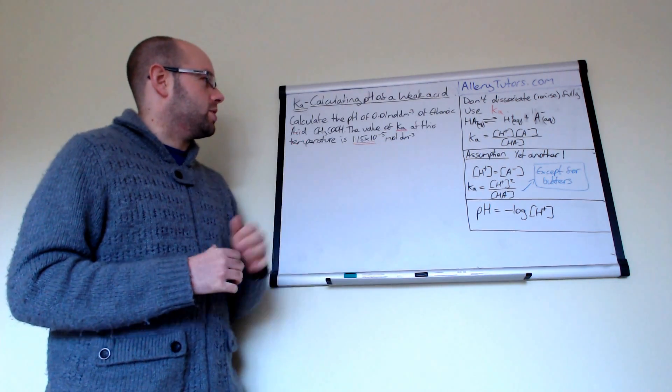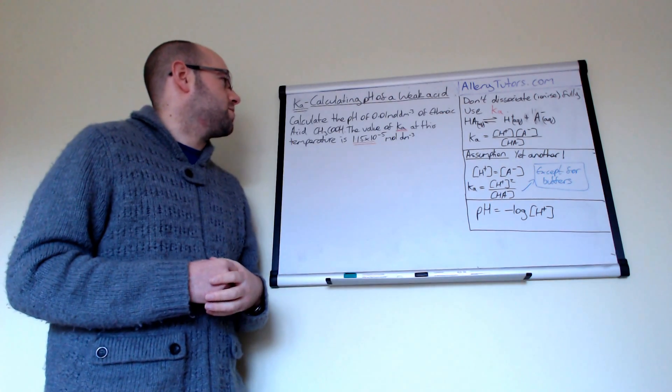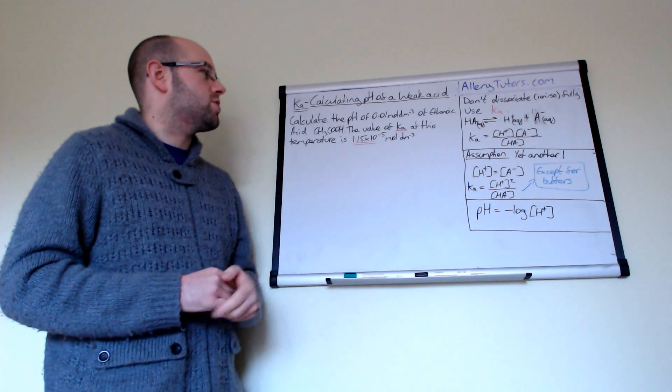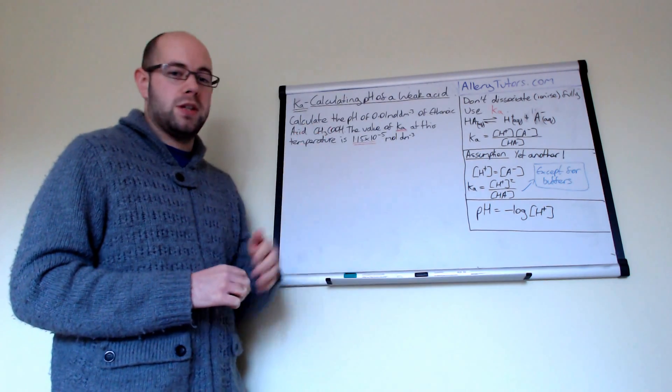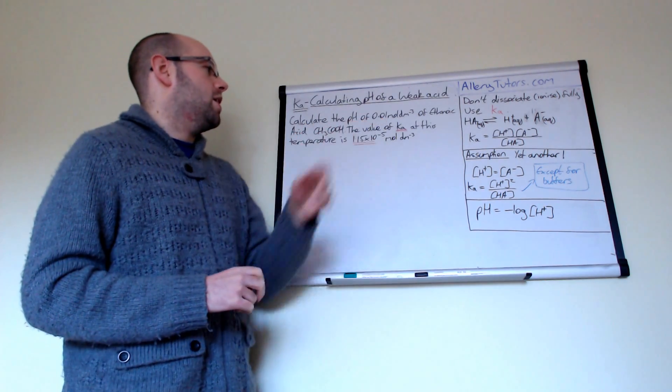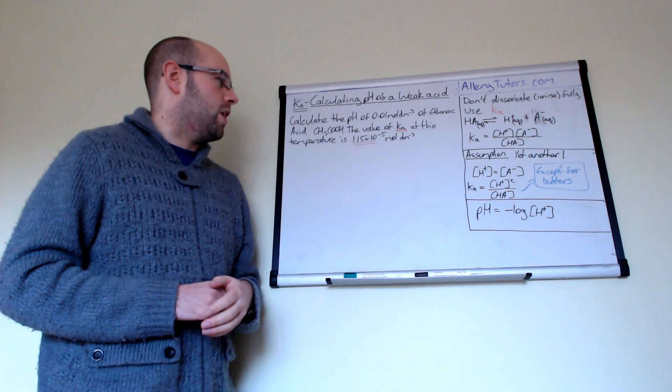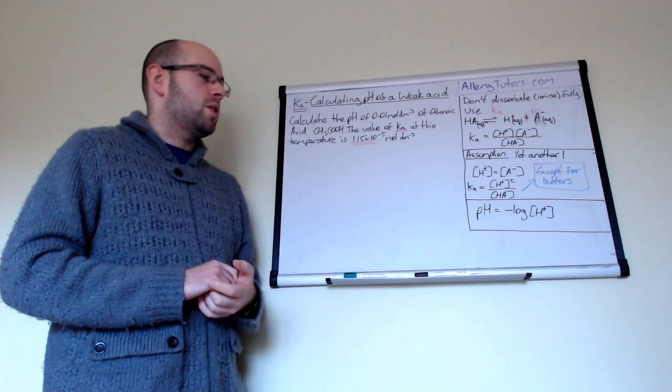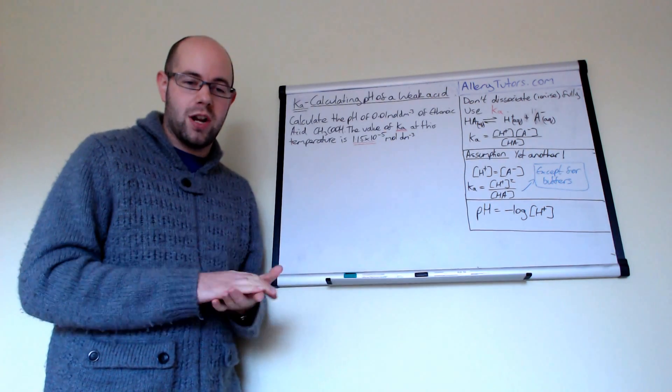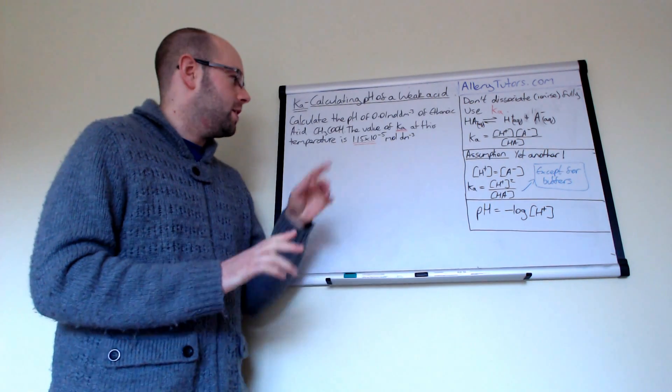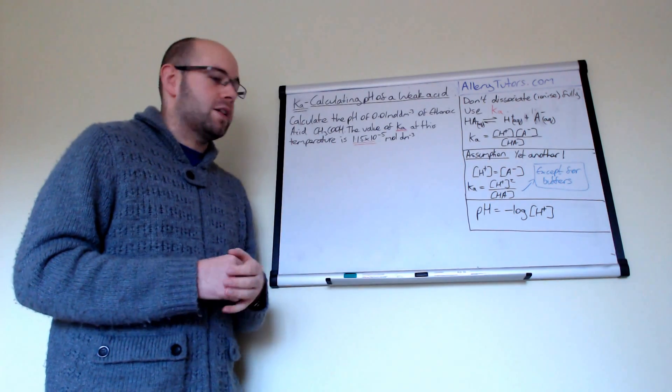So we're going to look at this example question here and work out the answer to it. So it says calculate the pH of 0.01 moles per dm cubed of ethanoic acid, which is CH3COOH. And the value of Ka at this temperature is 1.15 times 10 to the minus 5 moles per dm cubed. So a bit like Kc, Ka is altered and can be changed by temperature. So this is assuming at a fixed temperature or a certain temperature, that is the value of Ka.